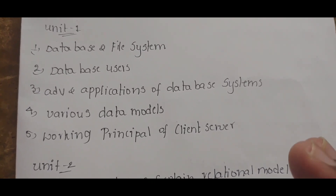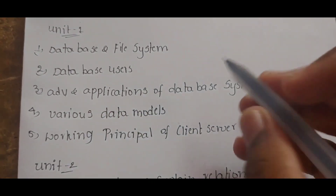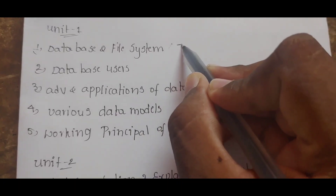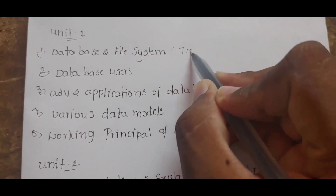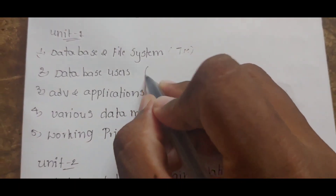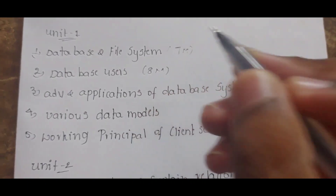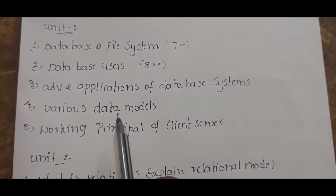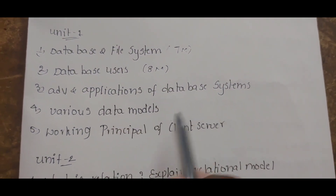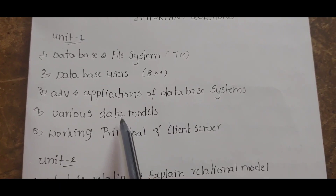So the 8-mark questions pattern applies. The next topic is the circuit — database and file system. For R20, the database topics carry 5 marks each, and for 8-mark questions, both regulate similarly.